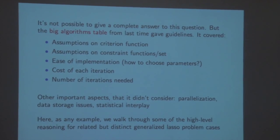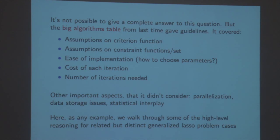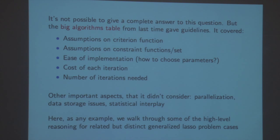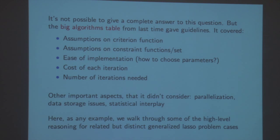We've been building intuition about the strengths of first-order versus second-order methods. The table from last time was a summary of their properties: what assumptions on the criterion function do you need to apply the method, what assumptions on the constraints, how easy is it to implement, how do we choose parameters like backtracking parameters, barrier parameters, step size parameters. The last two important considerations where methods really separate are: what is the cost of a single iteration for a typical problem, and what are the number of iterations needed before you get an accurate solution.